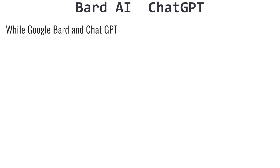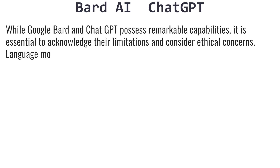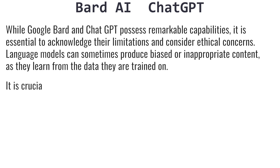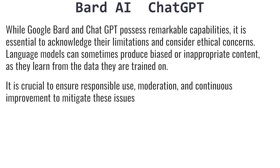Limitations and ethical considerations. While Google Bard and ChatGPT possess remarkable capabilities, it is essential to acknowledge their limitations and consider ethical concerns. Language models can sometimes produce biased or inappropriate content, as they learn from the data they are trained on. It is crucial to ensure responsible use, moderation, and continuous improvement to mitigate these issues.